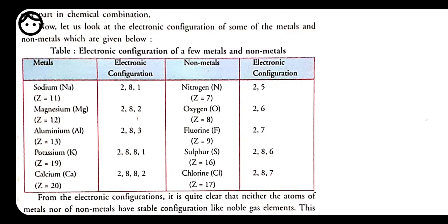Sodium gives its one electron to an element that needs one electron — like chlorine or fluorine, which need only one electron to complete their octet. So the bond forms between sodium and chlorine, giving sodium chloride. Because metals have only 1, 2, or 3 electrons in their outer shell, it is very difficult to take 7, 6, or 5 electrons, so they simply give their electrons. For magnesium, taking 6 electrons is hard; for aluminium, asking for 5 is hard.